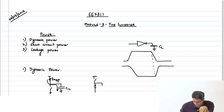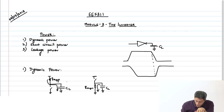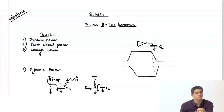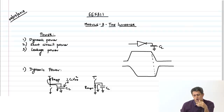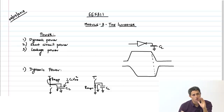Similarly in the discharging case, the PMOS will be cut off and the capacitor will get discharged through the NMOS transistor. Each time the capacitor charges to VDD, energy of half CL·VDD² gets stored. The power supply supplies CL·VDD² total — the remaining half gets dissipated in the PMOS transistor as heat. Irrespective of what the resistance or width of the PMOS is, the same amount of energy is always dissipated.